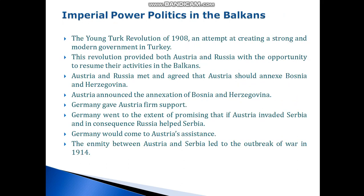Next subtitle — Imperial Power Politics in the Balkans. The Young Turk Revolution took place in 1908, an attempt at creating a strong and modern government in Turkey. This revolution provided both Austria and Russia with the opportunity to resume their activities in the Balkan countries. Austria and Russia met and agreed that Austria should annex Bosnia and Herzegovina.